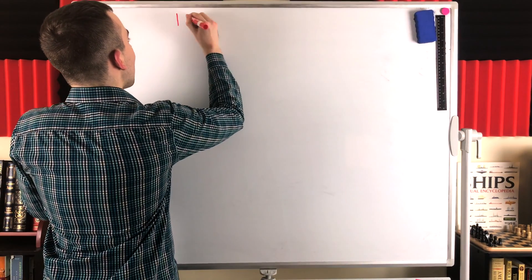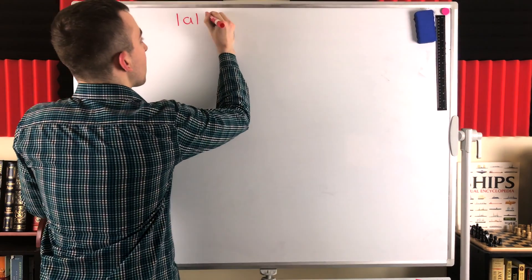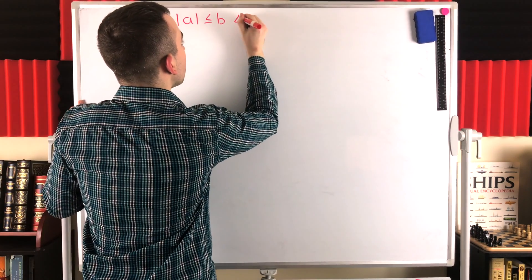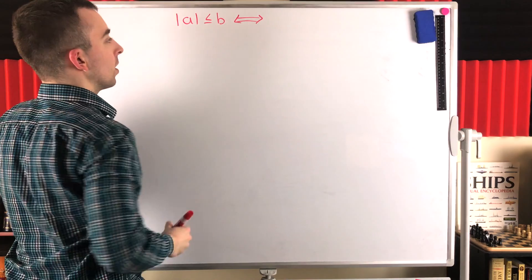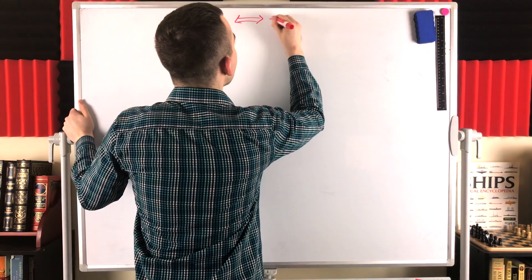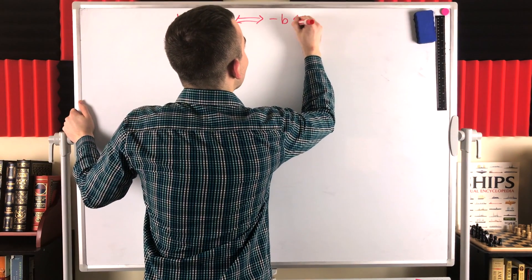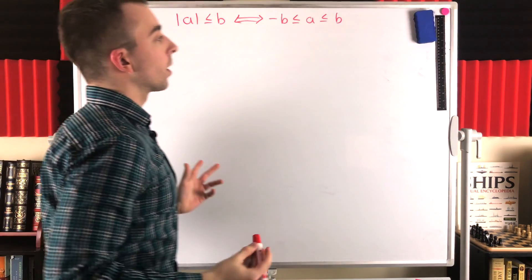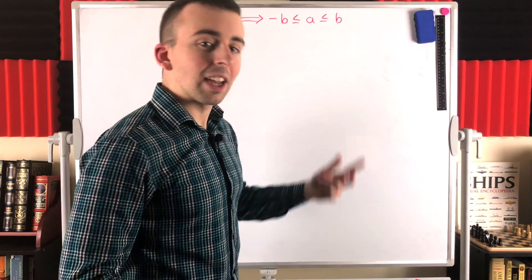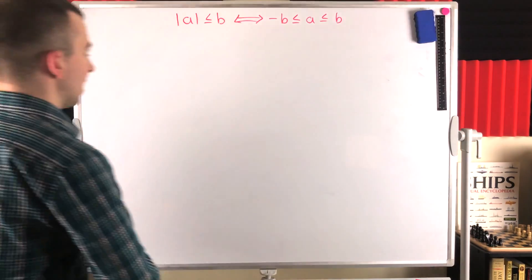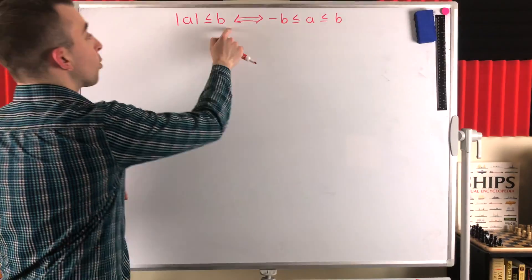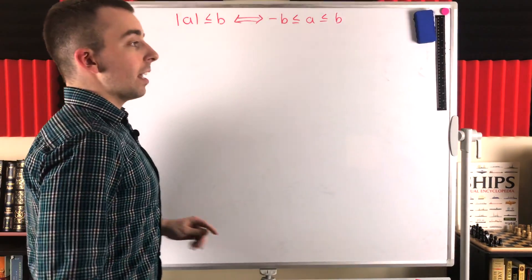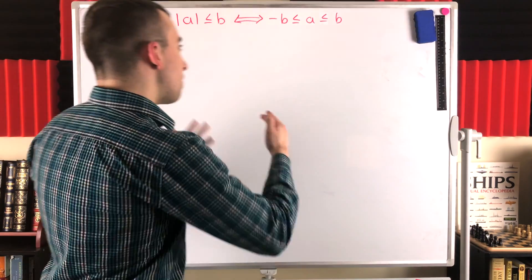In particular, we're proving that the absolute value of a real number A is less than or equal to B if and only if — which is why I've got this bidirectional arrow — negative B is less than or equal to A is less than or equal to positive B. This also works in any ordered field, but we've got the real numbers in mind in particular. Notice if B is greater than or equal to an absolute value function, certainly B is non-negative.